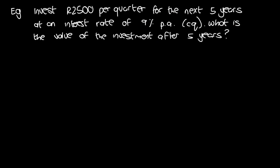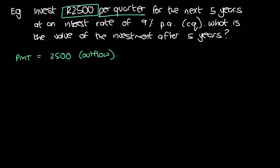We're going to do this on our financial calculator, so let's write down all the information we have. We're investing 2500 rand per quarter, so PMT is going to be 2500 — and since we're investing, it's an outflow, so it's negative. It's per quarter, so our payment periods P/Y is four. It's for the next five years, so N equals five years. We need to fix this because our P/Y and N units need to correspond, so we convert N into quarters by multiplying by four, giving us 20 quarters.